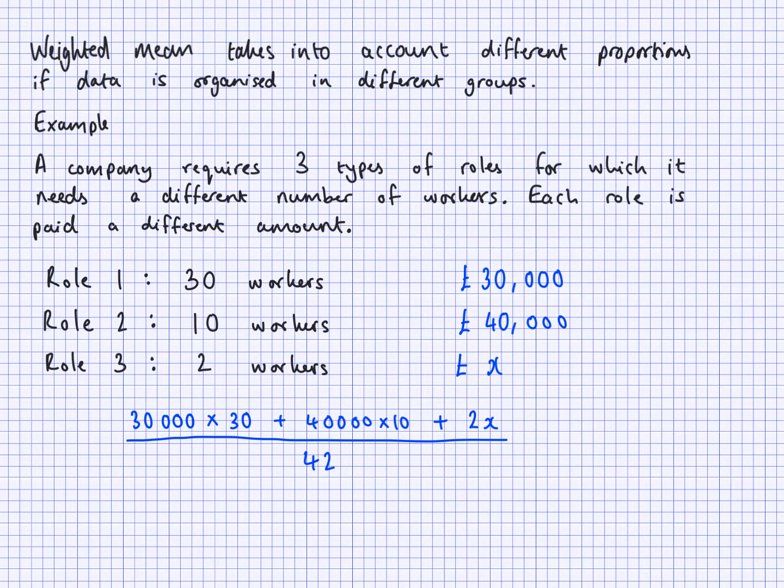Suppose we knew what the average salary was. Let's say that the weighted mean for their salaries is $42,000. How can I find what these two workers are earning? I could do this $42,000 multiplied by 42. Then I could subtract the $30,000 times 30. I can subtract the $40,000 times 10. I'll be left with 2X on this side. Finally, I would have to divide the value that I have here by 2 to get the value of X.